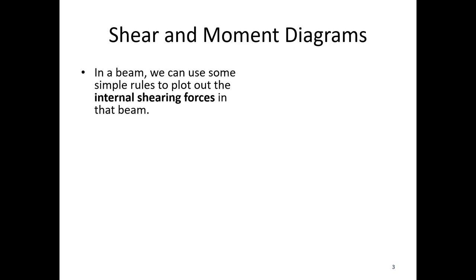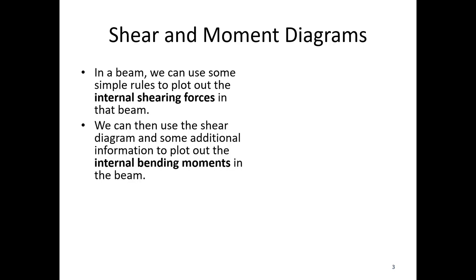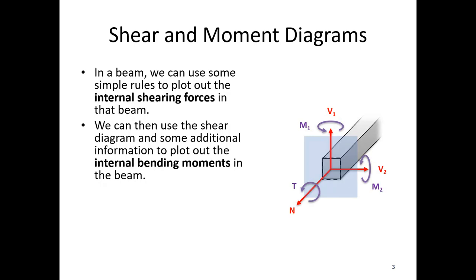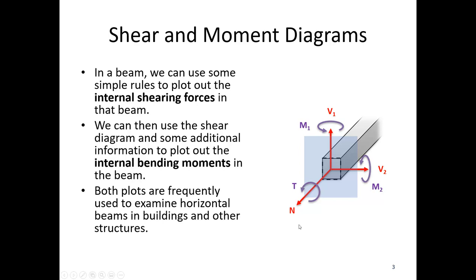In a beam we use some simple rules to plot out internal shearing forces, then we can use the shear diagram and some additional information to plot out the internal bending moment diagram. For a horizontal beam in a floor or roof supporting multiple loads, we'd be looking at the vertical shearing force V1 and the bending moment M2. If we have something on its side we could be looking at V2 and M1, but for the most common case it's going to be V1 and M2.